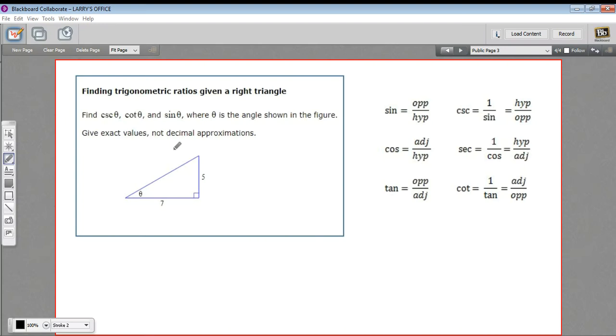In this problem, we're asked to find different trigonometric ratios in this right triangle. We have an angle theta. We're not given the degrees, but we're given two sides of the right triangle, so we can use the Pythagorean theorem to solve for the other side and set up our ratios that way.